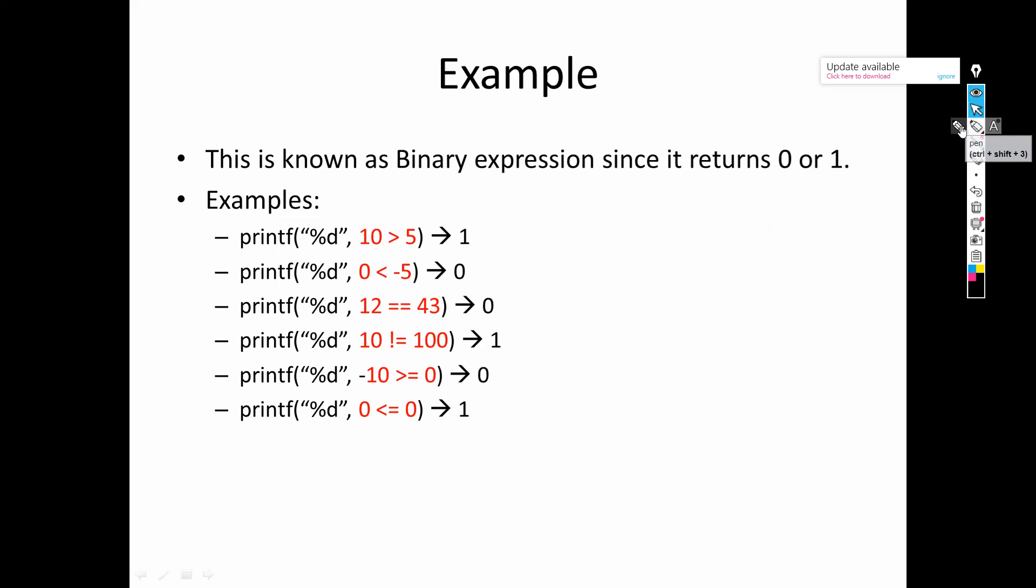These are considered to be binary expressions. Now relational operators are considered as binary expressions. Why binary? Because see, in any relation when you say A greater than B, now if you are checking whether A is greater than B or not, there are only two possibilities.